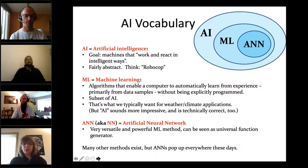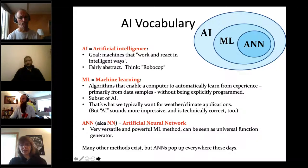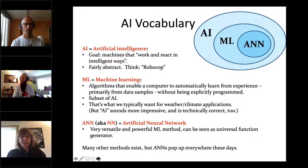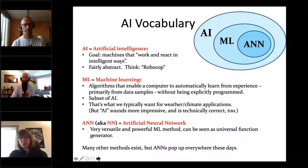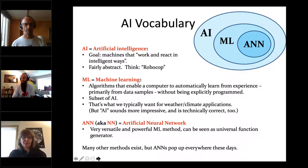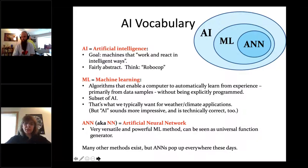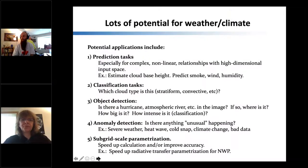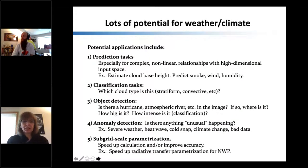An artificial neural network is probably the most popular and well-known machine learning method and gets the most hype. It's a very versatile and powerful machine learning method that can be seen as a universal function generator. We definitely talk about artificial neural networks, among other things, a lot. Many other methods exist, but neural networks pop up everywhere these days.